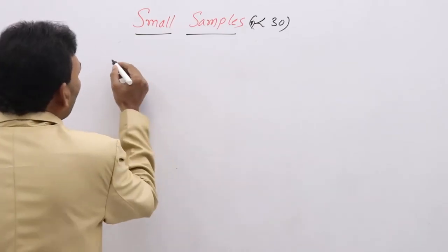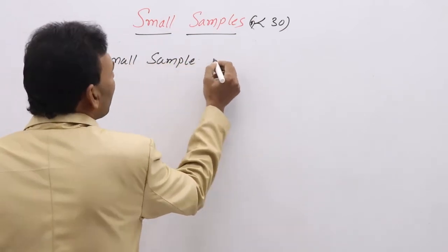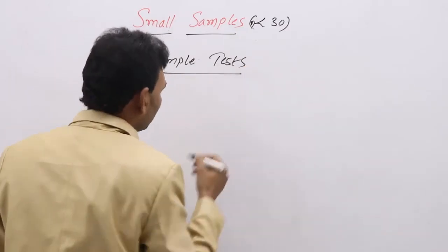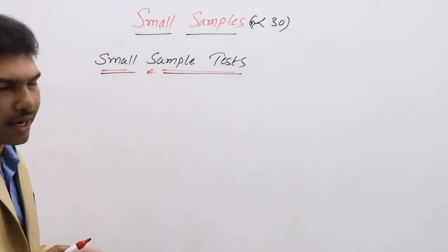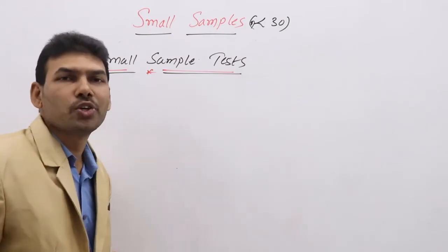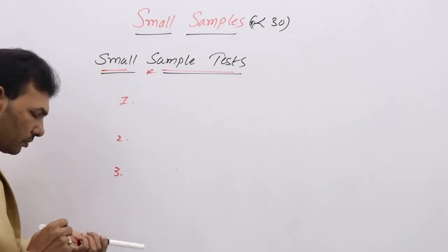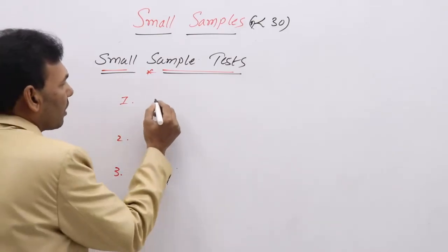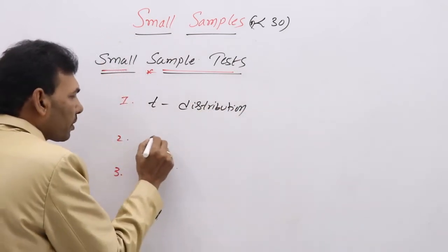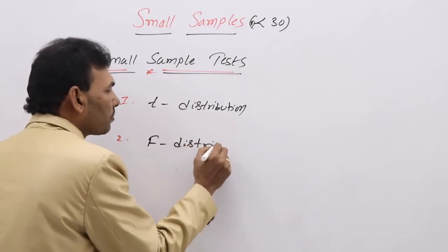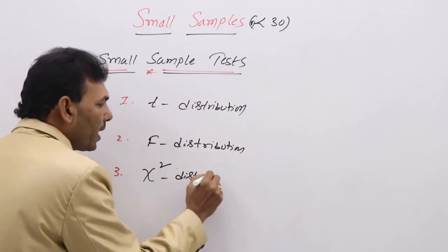Small sample tests are tested using three types of distributions: T-distribution, F-distribution, and chi-square distribution.